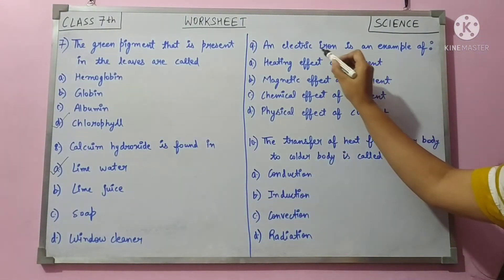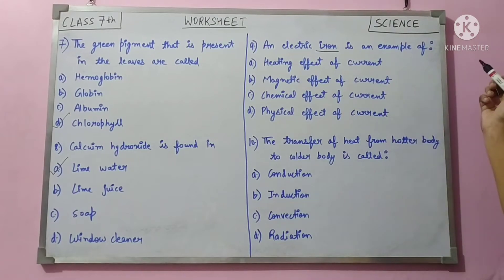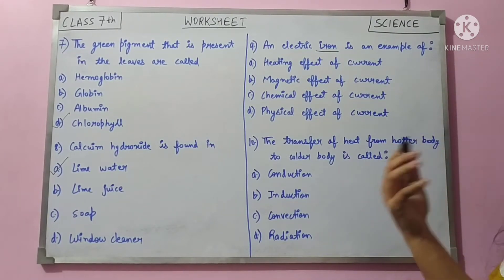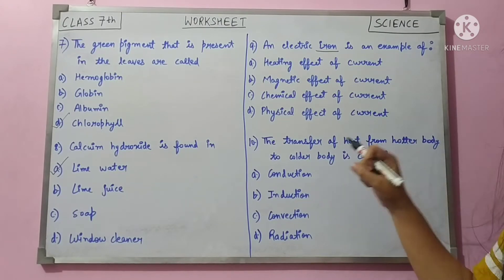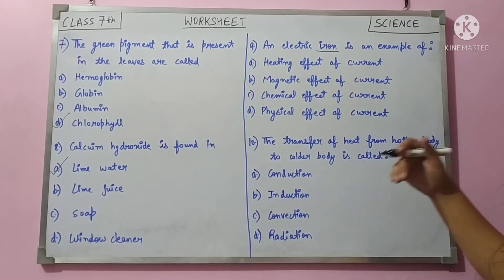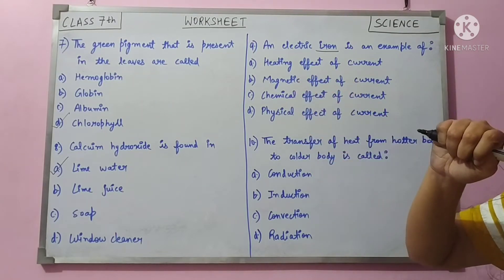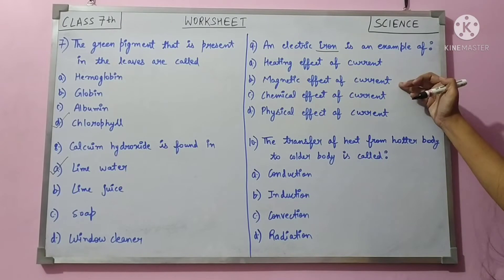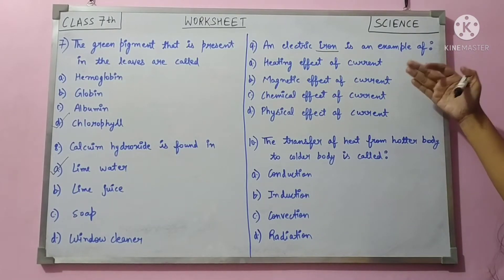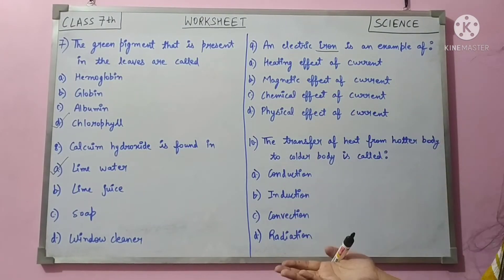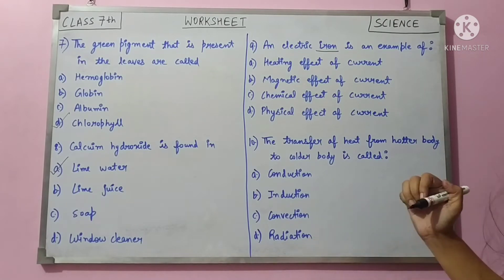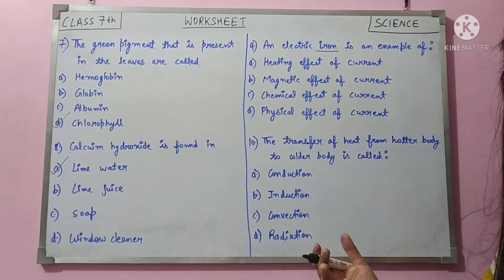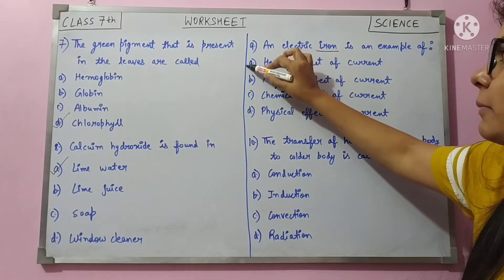Question 9: electric iron is an example of — the iron gets hot at the bottom and we use it to remove creases and wrinkles from clothes. Obviously it removes wrinkles using heat. We studied two effects in this chapter: heating effect and magnetic effect. Magnetic effect covers electric bell and electromagnet. Heating effect covers appliances like geyser, iron, and microwave. Answer is A — heating effect of electric current.